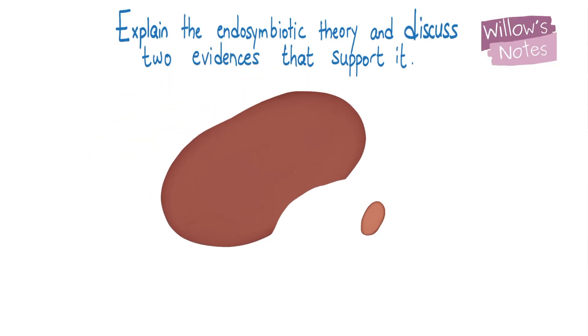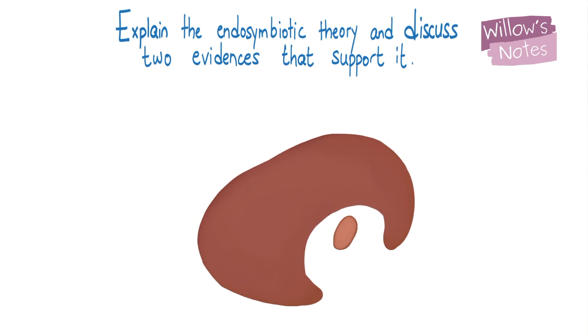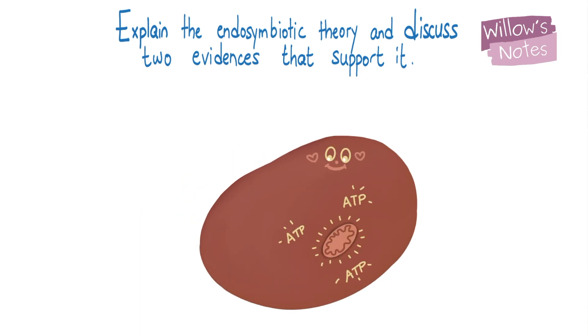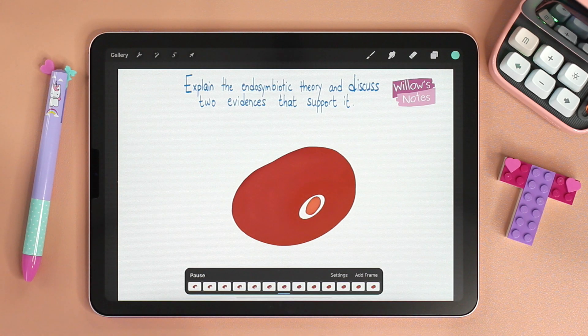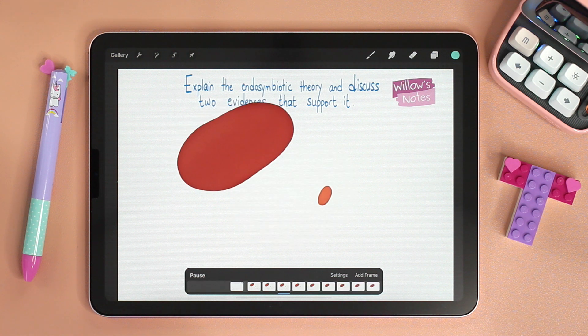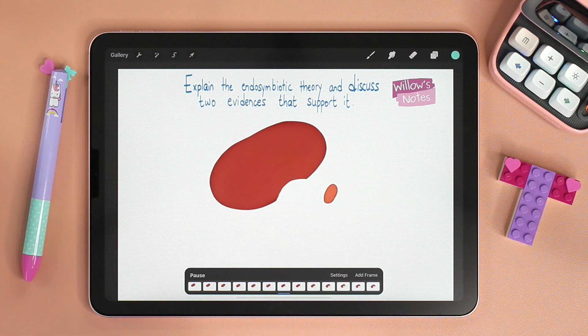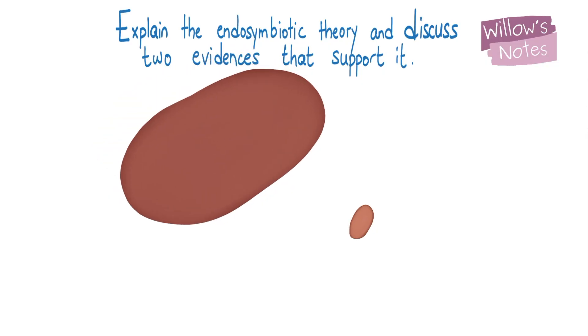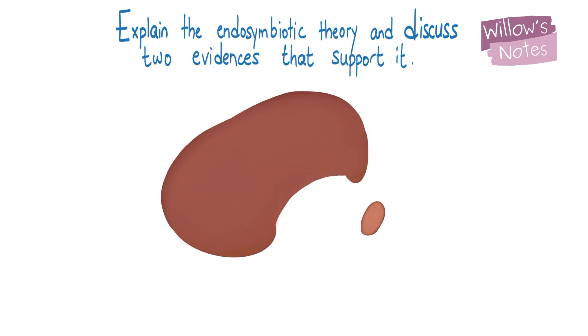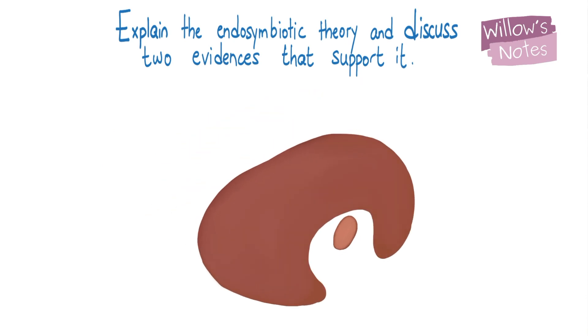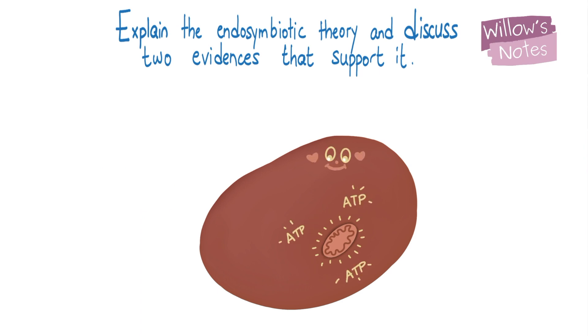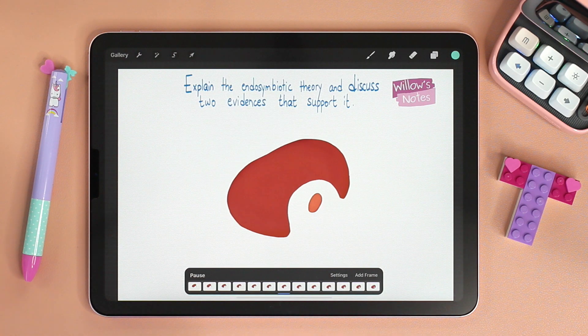The larger cell is now supplied with a powerhouse, and instead of digesting the cell, a symbiotic relationship started between the two. The smaller cell has a safe place to live and the larger cell has a supply of ATP. Hence the term endosymbiosis, where an endosymbiont is an organism that lives inside another where both benefit. Over generations, the engulfed cell became what we now call mitochondria.